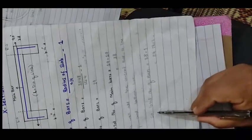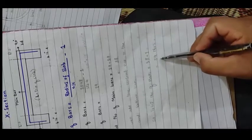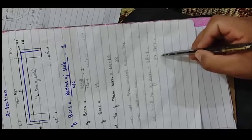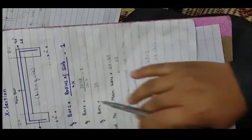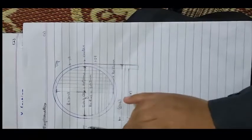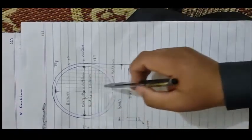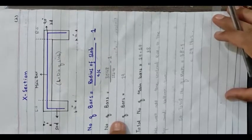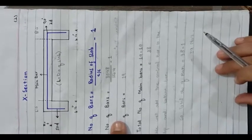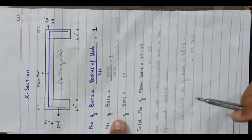The total number of bars is equal to 38 plus 1, giving us 39 bars. So the number of bars used in this circular slab in the left-to-right direction is 39. I think this is enough for today and we will continue this lecture in the next video. If you have any questions regarding this lecture, you can ask in the comment section. Thank you.